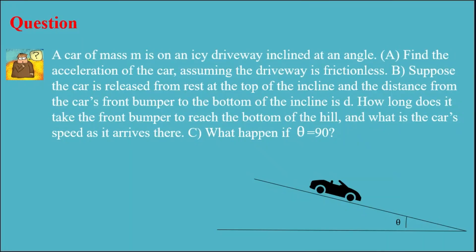Here, a car with a mass of m is inclined at the angle of theta. I need to find the acceleration of the car if the surface is frictionless. Also, if the car is released from rest at the top of the incline and the distance from the car's front bumper to the bottom of the incline is D, I need to find out how long it takes the front bumper to reach the bottom of the hill, and the speed when it arrives there. Finally, I need to find out what happens if theta is equal to 90.